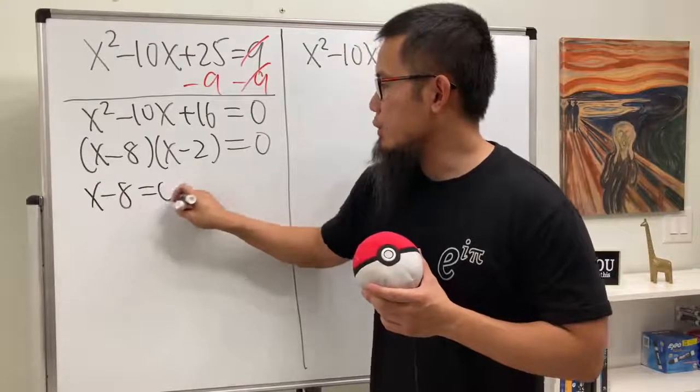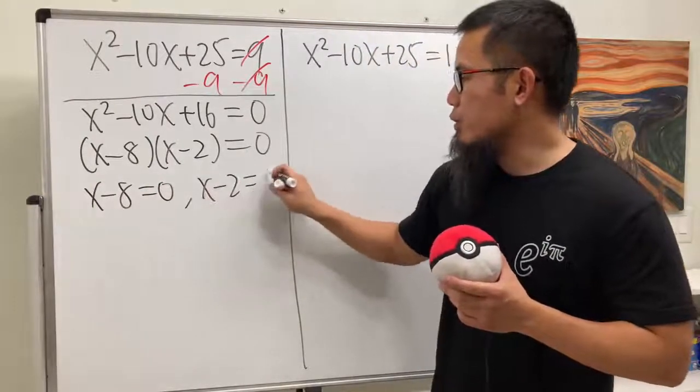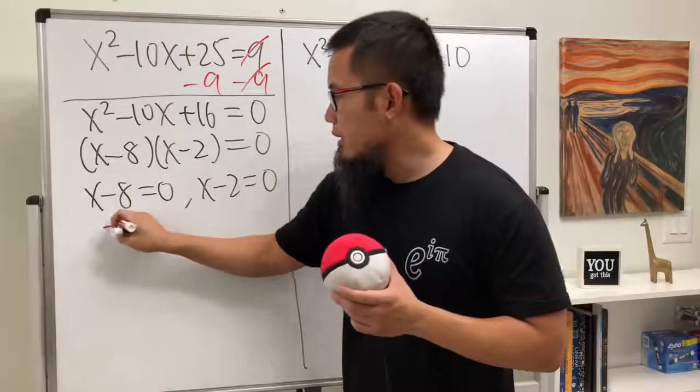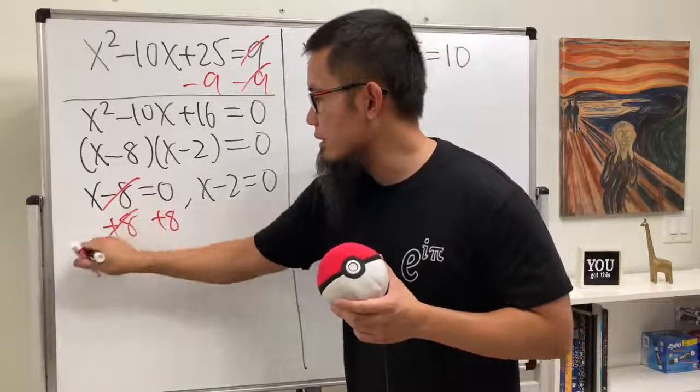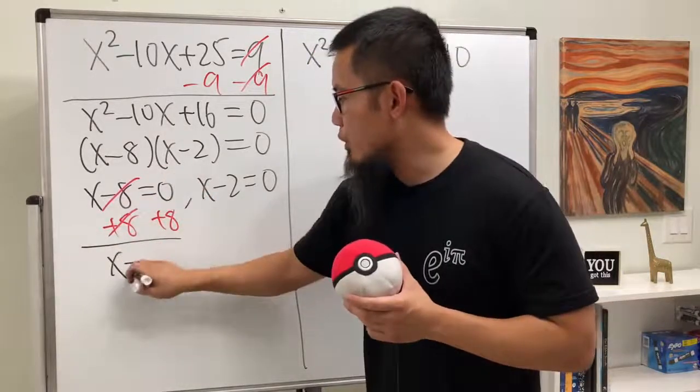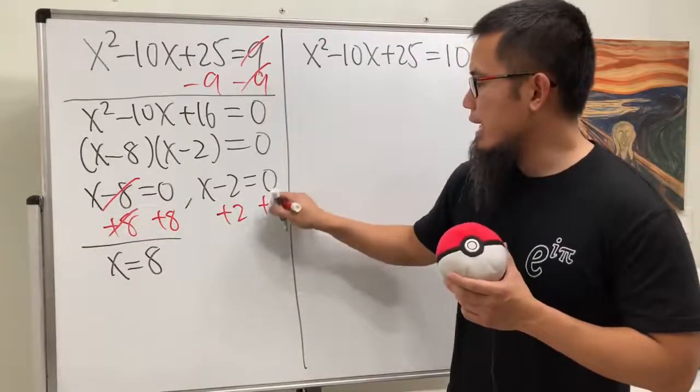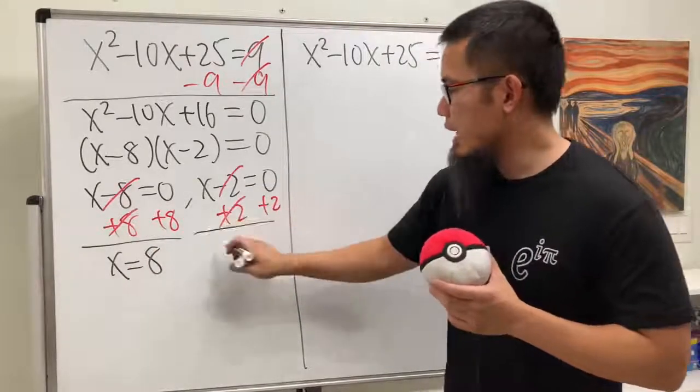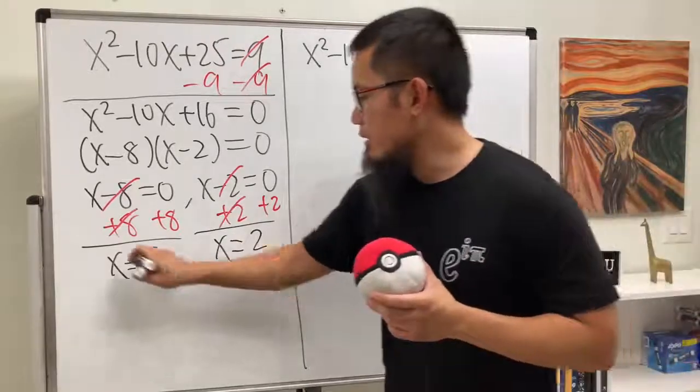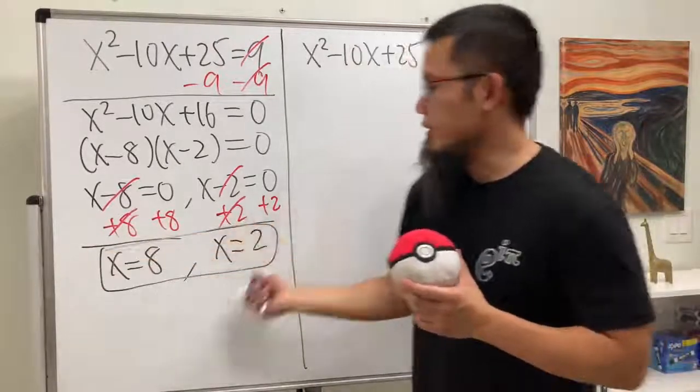x minus 8 is equal to 0, and then x minus 2 is equal to 0. For the first one, add the 8 on both sides, cancel this out, so we get x is equal to plus the 8. For the second one, just add the 2 on both sides, cancel this out, so we get x is equal to 2. Done deal. So, here are the answers.